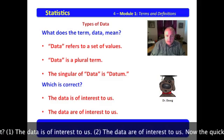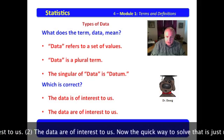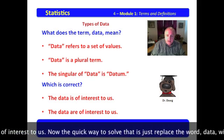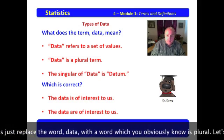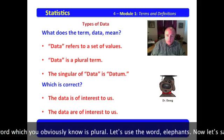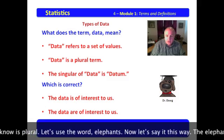Now, which of the following is correct? The data is of interest to us. The data are of interest to us. Now, the quick way to solve that is just replace the word data with a word that you obviously know as plural.